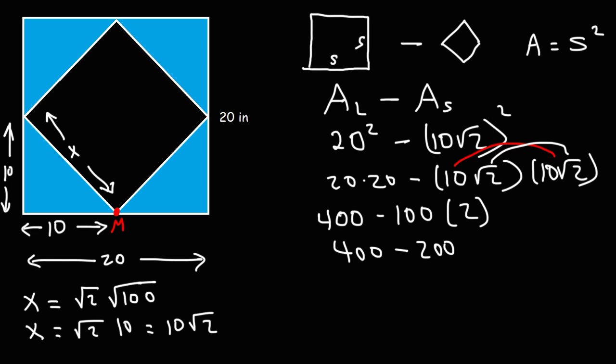400 minus 200 is 200, so this is the area of the shaded region. When dealing with area, it's always square units, so it's 200 square inches. That's how you can find it—you simply take the area of the larger object and subtract it by the area of the smaller object, and that will give you the area in between.